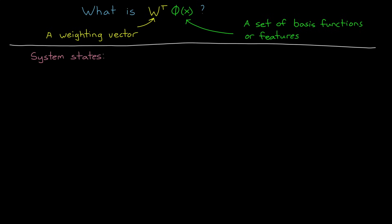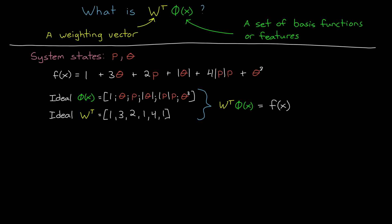For example, let's assume a system has two states, p and theta, and that the unknown variations to the system are F of X equals one plus three times theta plus two p plus the absolute value of theta plus four times the absolute value of p times p plus theta cubed. In this case, an absolute ideal phi would consist of a bias one plus the other features: theta, p, the absolute value of theta, the absolute value of p times p, and theta cubed. And then the absolute ideal weights would be one, three, two, one, four, and one.